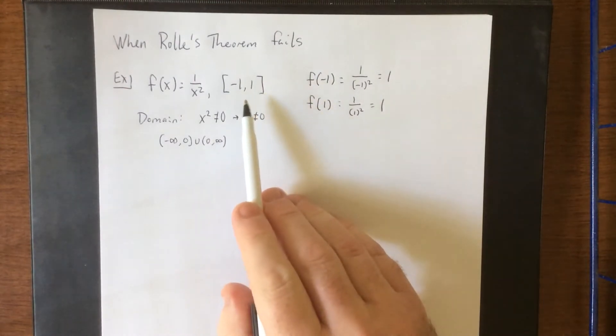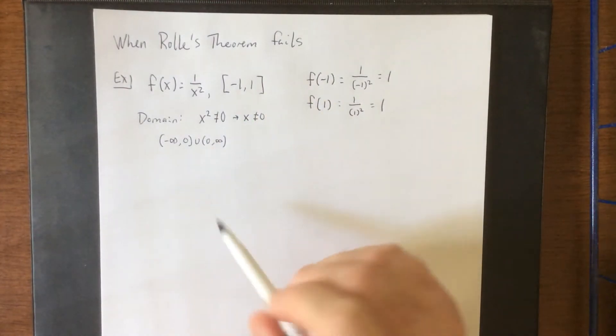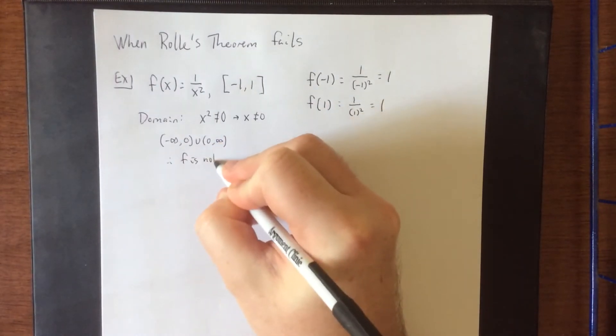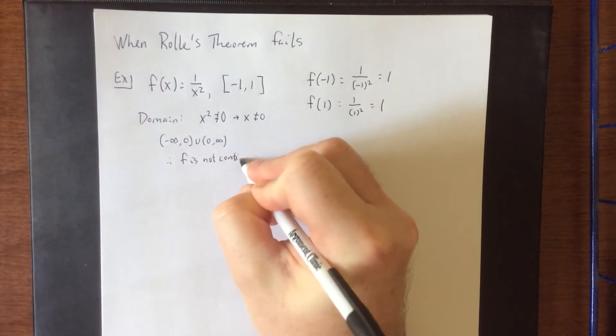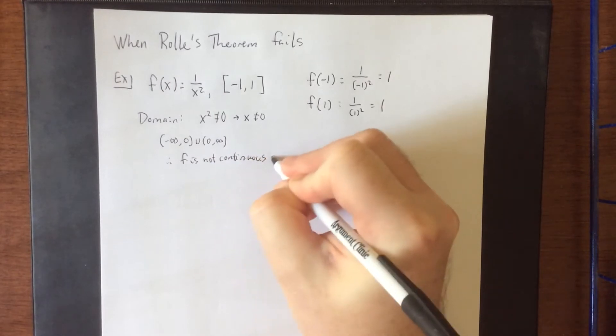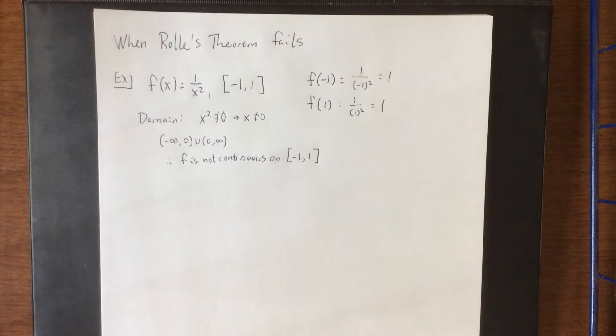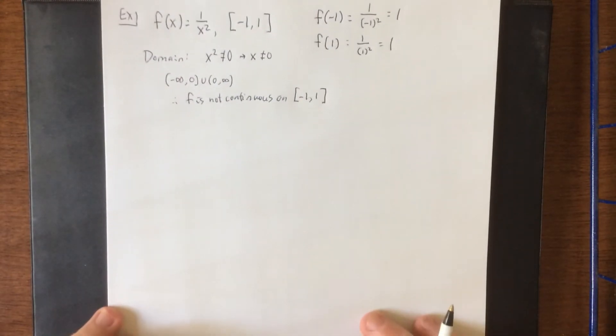Unfortunately the interval in question is not contained within the domain and therefore f is not continuous on the closed interval from negative 1 to 1. So the first of the three hypotheses of Rolle's theorem fails, therefore Rolle's theorem doesn't apply here.